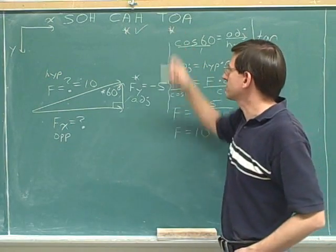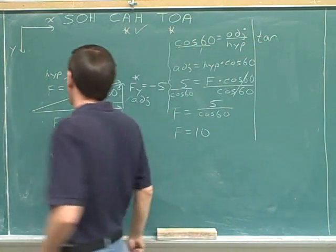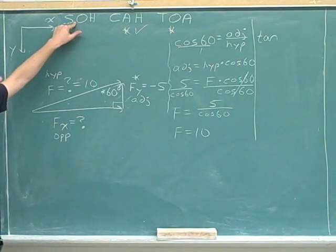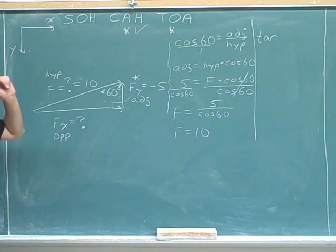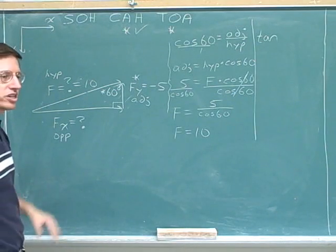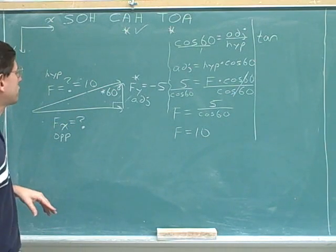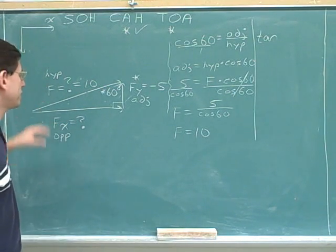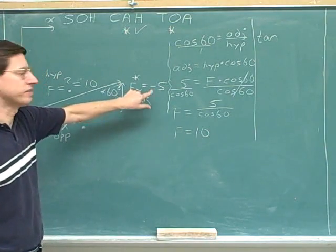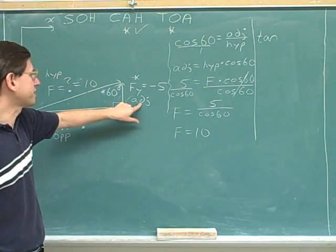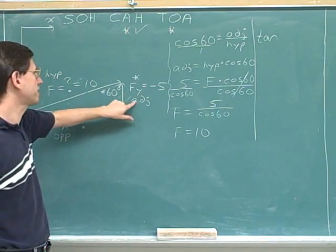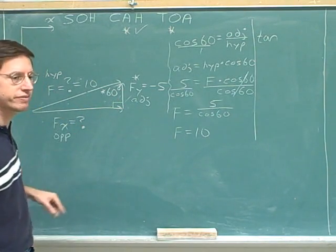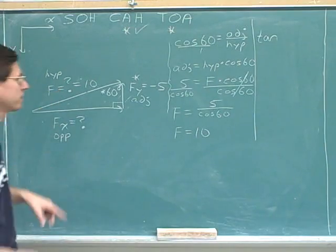Remember, our plan was to use the cosine and then the tangent. Now, at this point, we could use the sine because now we know the hypotenuse. But as I've already mentioned many times in these videos, conventionally, we usually try to figure out each side just based on the sides we were originally given. Originally, we were given the adjacent side, not the hypotenuse. So we're going to try to figure out the opposite side using the adjacent side, not using the hypotenuse, even though it would be perfectly legal to use the hypotenuse.